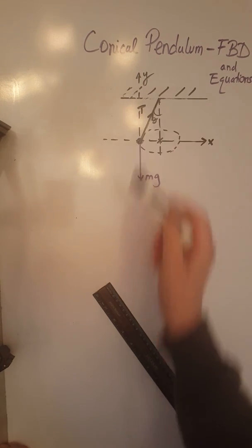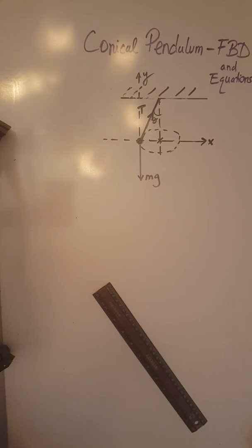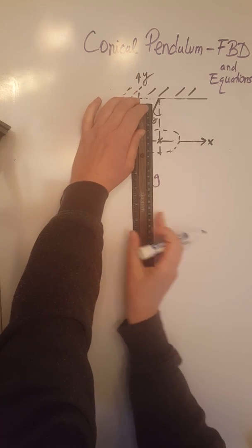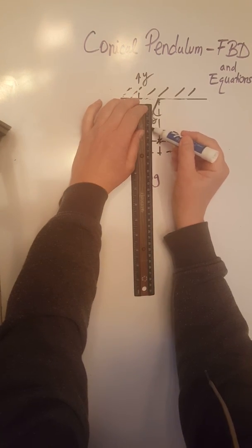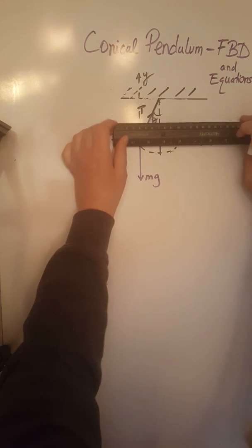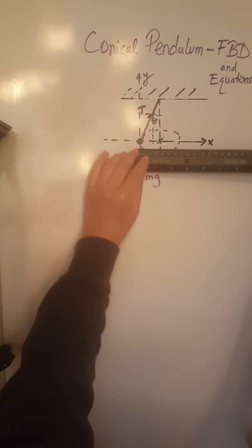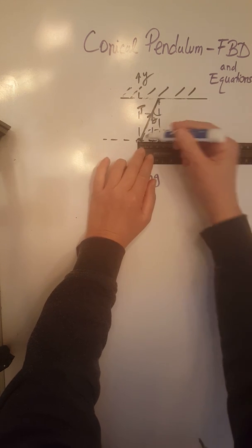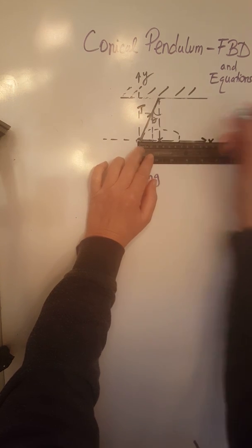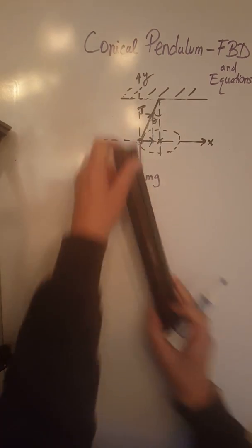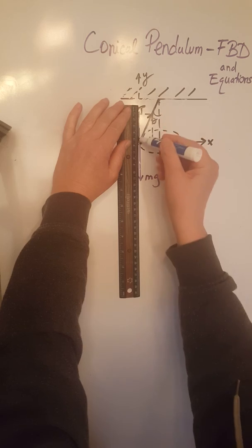Now we can see that out of the two forces acting upon the bob, mg and T, only T must be resolved. Let's do that. I'm going to actually use blue over here to resolve T. We're going to draw from the arrow of T perpendicular to both the x and y axis. Then we are going to get our two components, one of them on the x-axis and the other one on the y-axis.